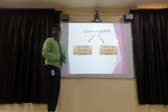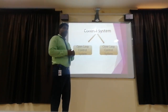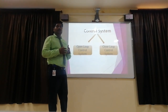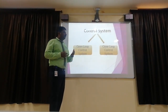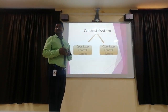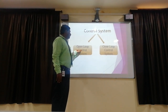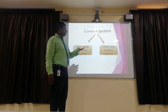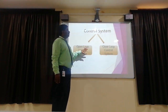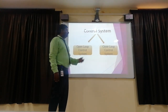There are two types of control systems. The first is the open loop control system, and the second is the closed loop control system. These are the two classifications of control systems.